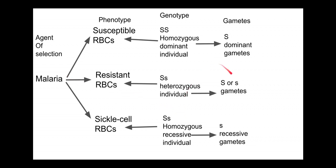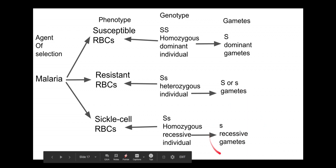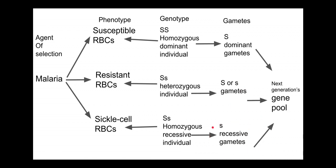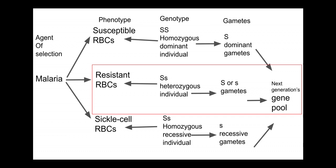This genotype is what gets passed on to the gametes. Big S big S homozygous dominant individuals, if they survive malaria, produce gametes with big S and pass it on to future generations. Big S little s heterozygotes are resistant to malaria, more likely to survive to reproductive age, and produce both big S and little s gametes. Individuals with sickle cell anemia tend not to survive to reproduction, but if they do, they produce little s gametes. It is the heterozygous category that has resistant red blood cells and, when malaria is present, the highest fitness — most frequently surviving to reproduction.